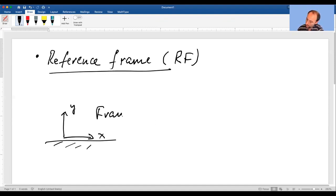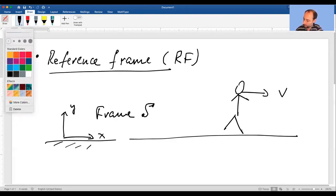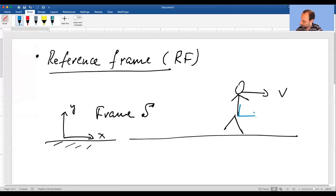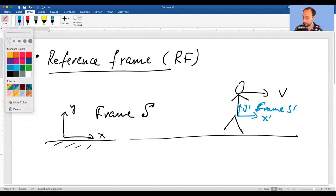So here's the reference frame of the ground, x-y. For some reason they always call frames by letter S, frame S and frame S prime. So here's a person walking with some velocity v, and they have their own reference frame. So here's a reference frame. It's not particularly highbrow, it's what you think it is.